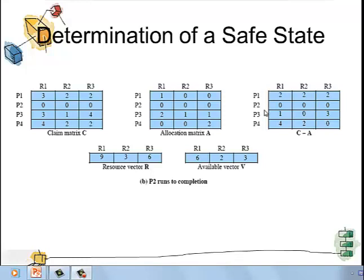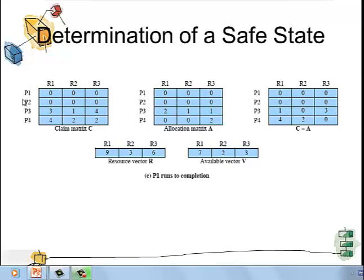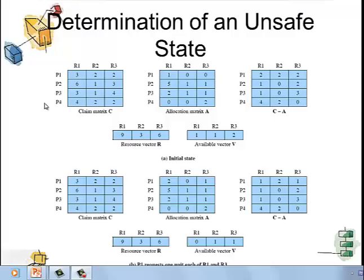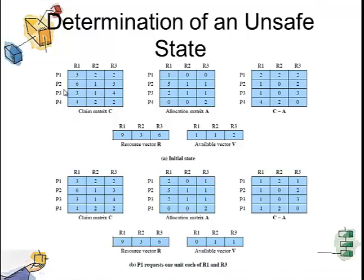If P1 gets executed next, its row becomes triple 0 in all three matrices and resources are added to available vector V, now showing 7,2,3. P3 or P4 whichever is executed next will not cause deadlock. When P3 executes, resources are added to V making it 9,3,4, and then P4 gets executed. After P3, P4 completes leading to a safe state.